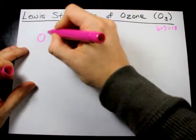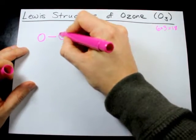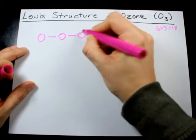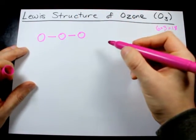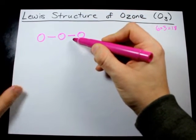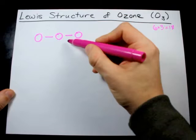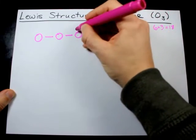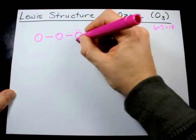Now, the most common structure you'll see for ozone has three O's in a line, not a ring. I've already used four electrons by single-bonding these oxygen atoms together, and I'm going to fill the octet on the outer oxygens.